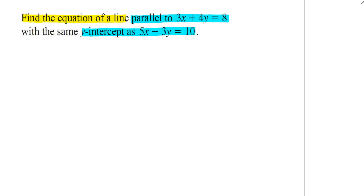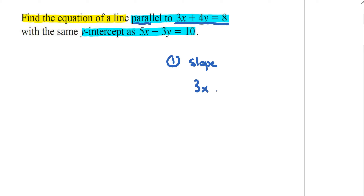There's a lot of information in this problem. If I want to find the equation of a line that's parallel to this line, those two lines must have the same slope. So I take 3x plus 4y equals 8 and I need to find the slope of this line, because the line we're looking for is parallel to it.